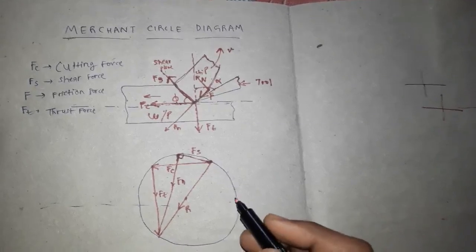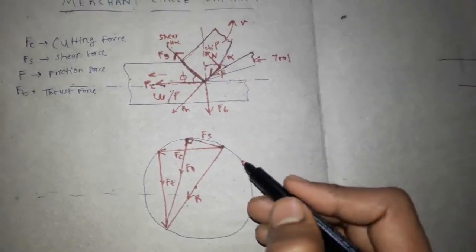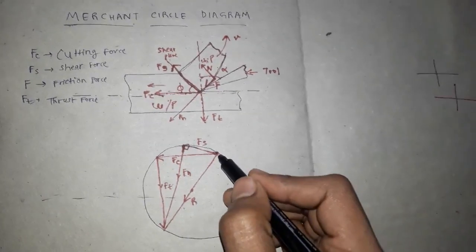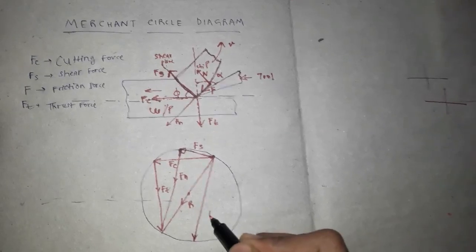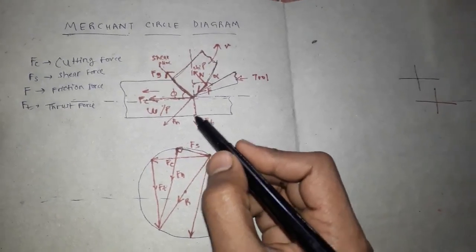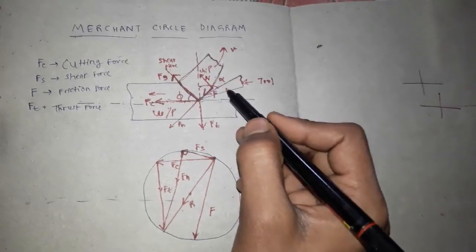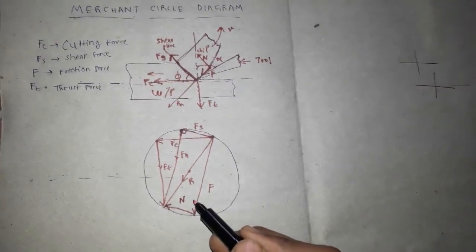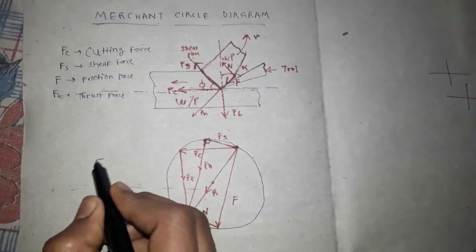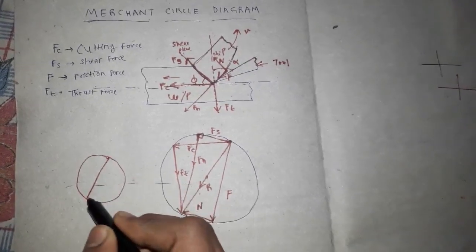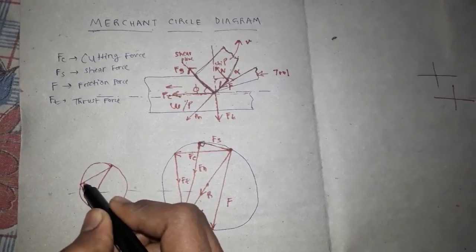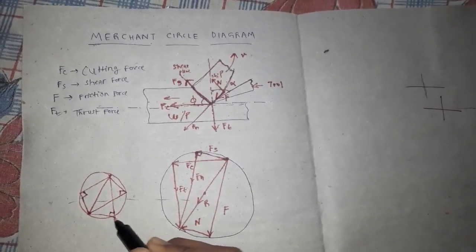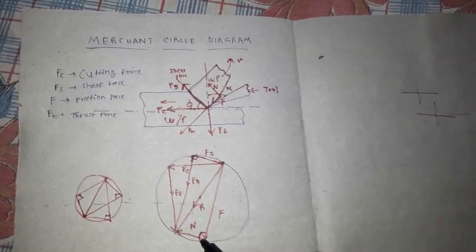The friction force is acting in this direction, so we draw the friction force F here. Due to the force applied by the chip on the tool, the normal force N also comes and acts perpendicular to the friction force. In a circle, any angle drawn from the diameter is 90 degrees — so all the forces drawn from this resultant are at 90 degrees to each other.